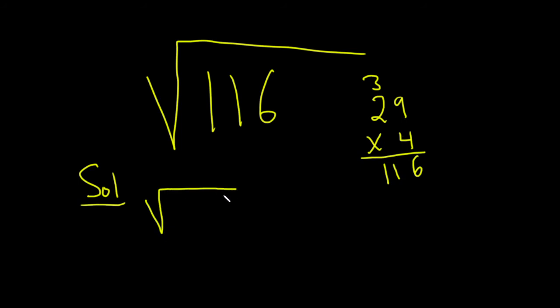So we can write this as square root 116 equals square root, and then we have 4 times 29.